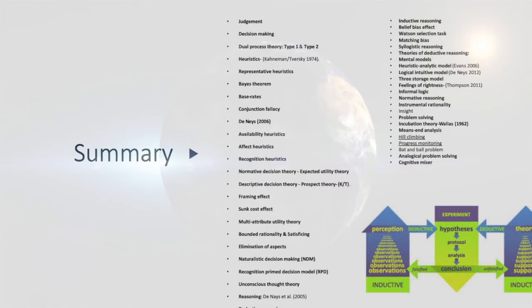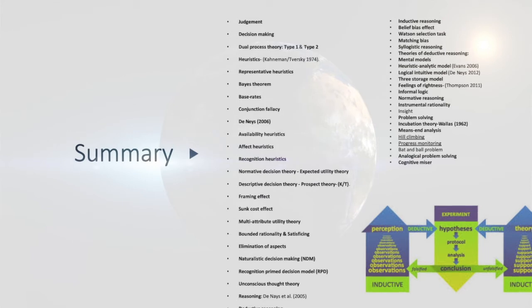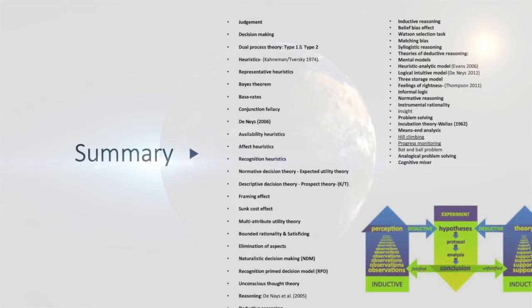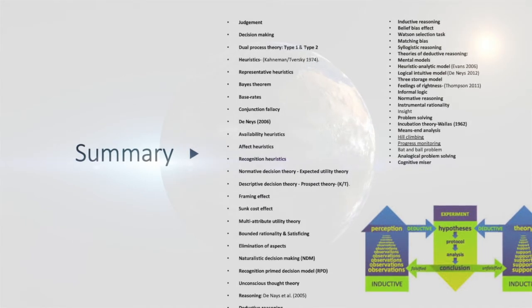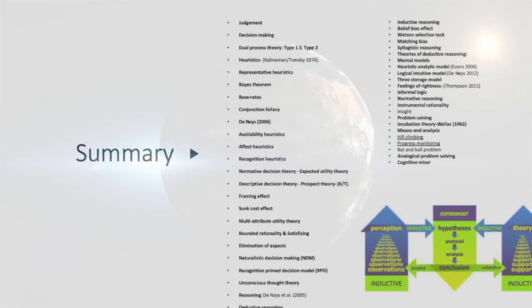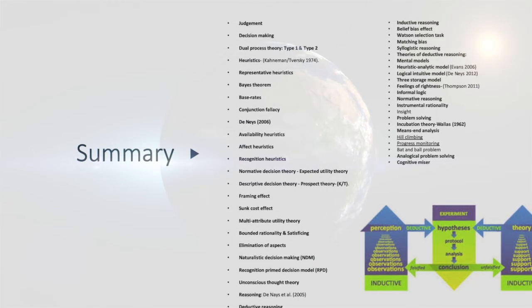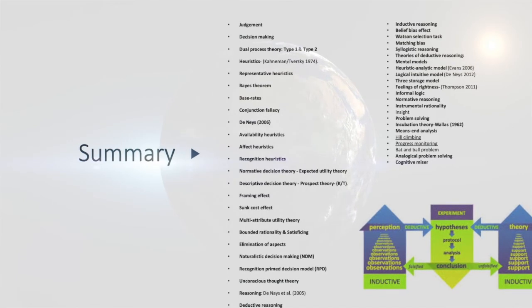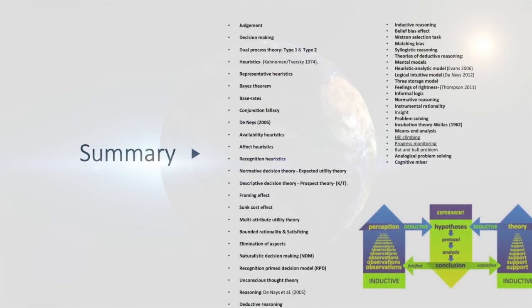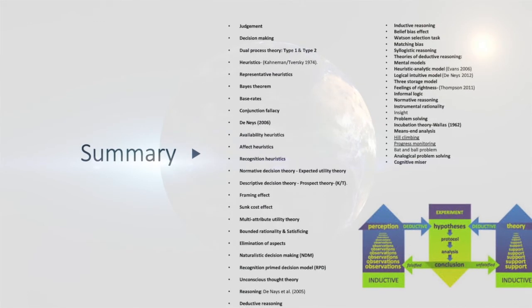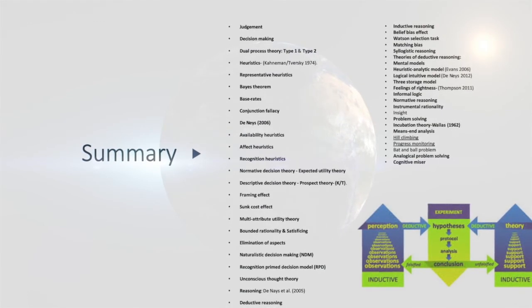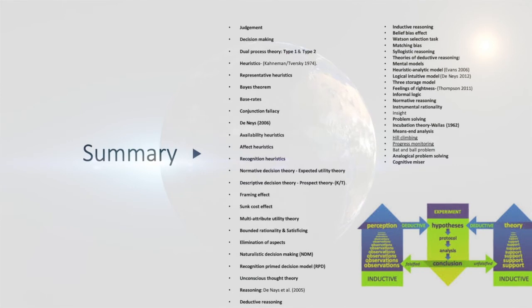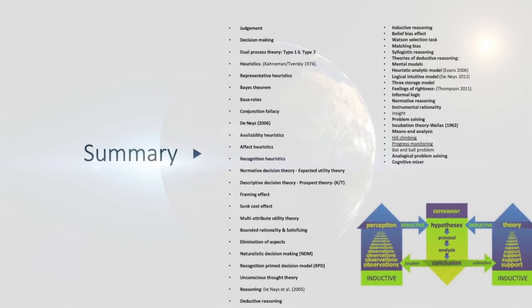In summary, we looked at judgment, decision making, dual process theory including Type 1 and Type 2, heuristics by Kahneman and Tversky 1974, representative heuristic, Bayes' theorem, base rates, conjunction fallacy, Denays 2006, availability heuristics, affect heuristics, recognition heuristics, normative decision theory, expected utility theory, descriptive decision theory, prospect theory by Kahneman and Tversky, framing effect, sunk cost effect, multi-attribute utility theory.